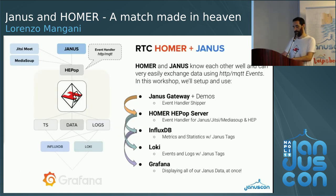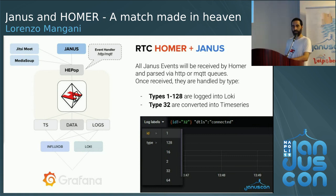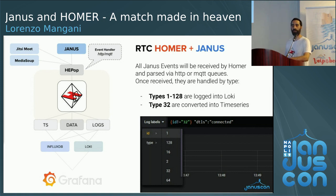So what is the data flow today? RTC Homer plus Janus means we're going to configure Janus to ship events to HEPOP, which opens a JSON socket via HTTP, HTTPS, or MQTT. It processes those events and then splits the data, routing it to different platforms depending on how it's categorized. The Janus events are JSON objects that describe something that happened in time. All of them are logged as-is and made searchable within Loki in this demo. Type 32 events are converted into time series — I extract the data, synthesize them into tagged time series, and discard the raw JSON.